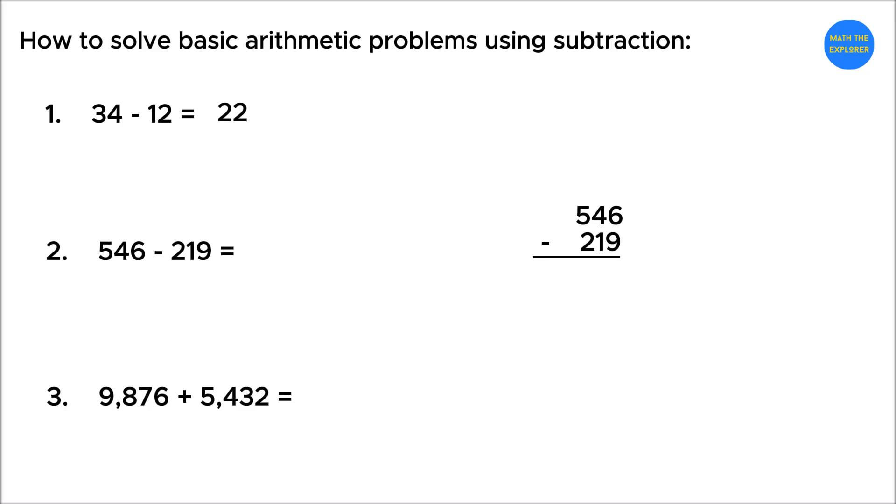To solve 546 minus 219, begin by lining up the numbers by place value, 1's, 10's, and 100's.